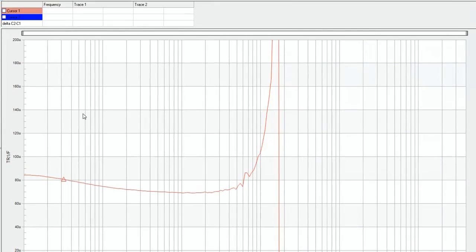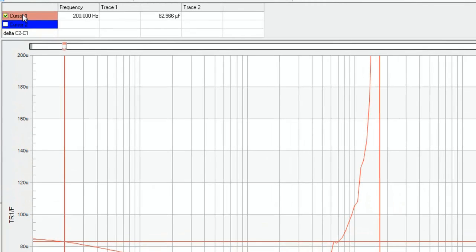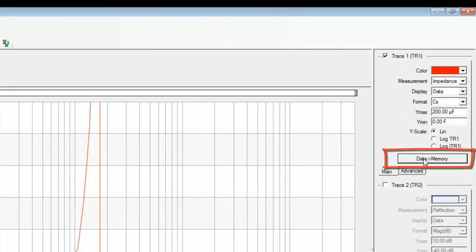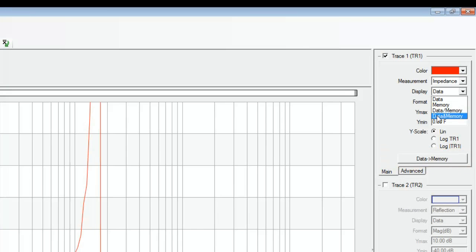At 200 hertz, activating a cursor leads to the result of 83 microfarad. I store the curve using the data to memory function and display data and memory.